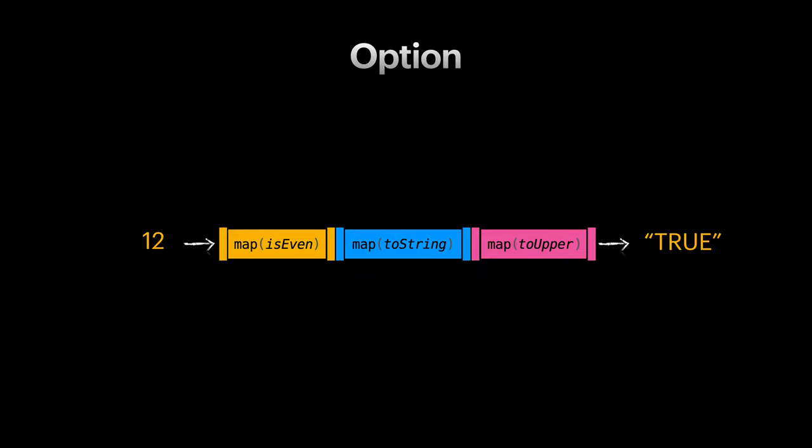Our input and output would be wrapped in option as well. So now the new pipeline not only behaves similar to before, it is now capable of handling the absence of a value as well, without us needing to change the implementation of is even, to string, or to upper functions.